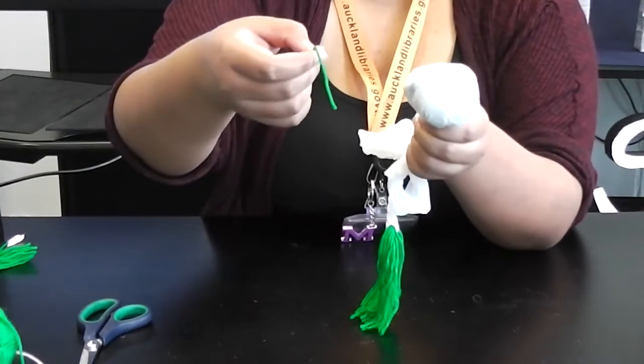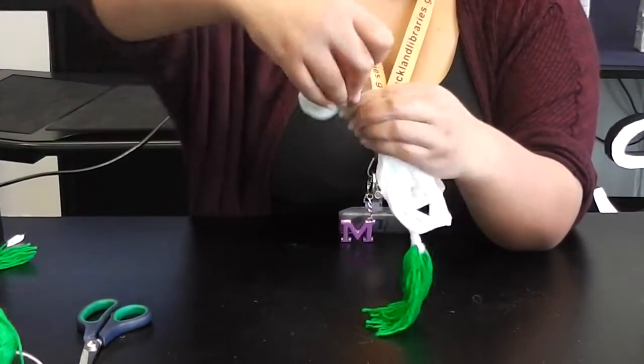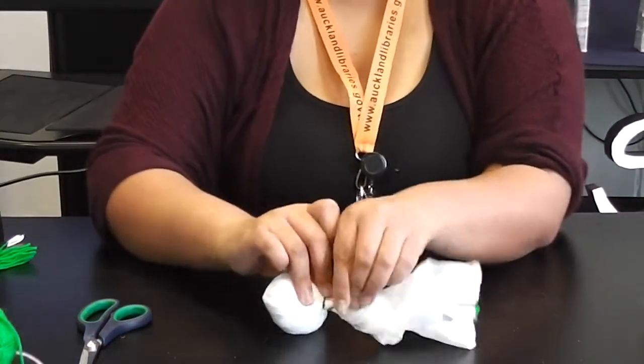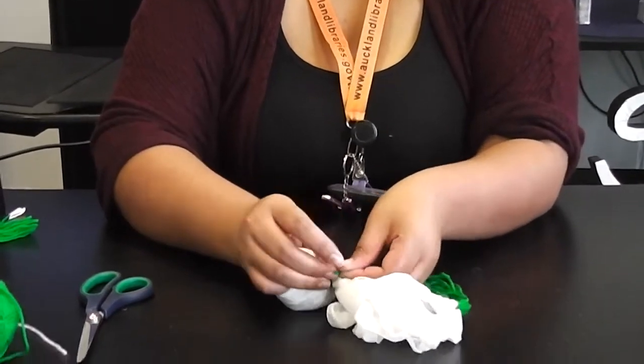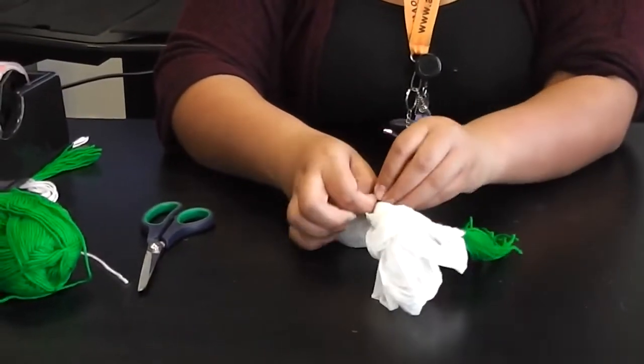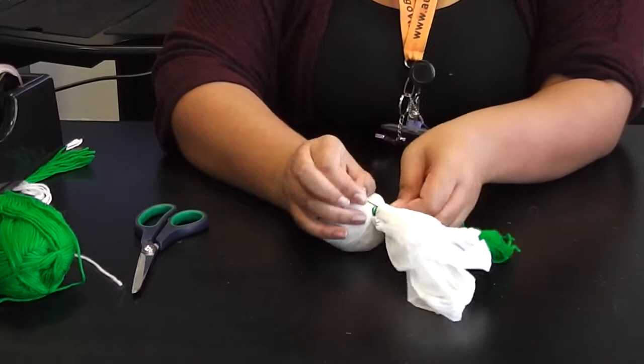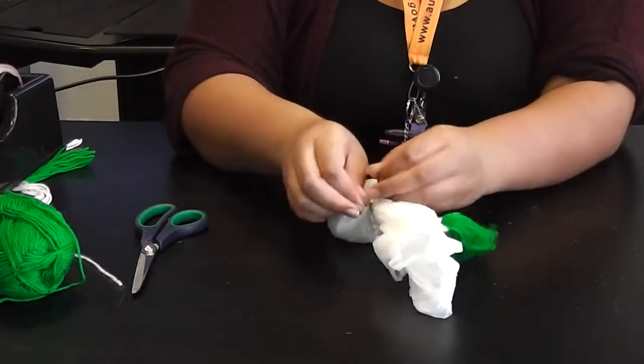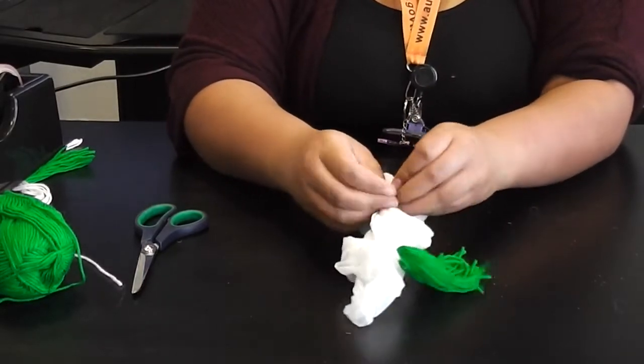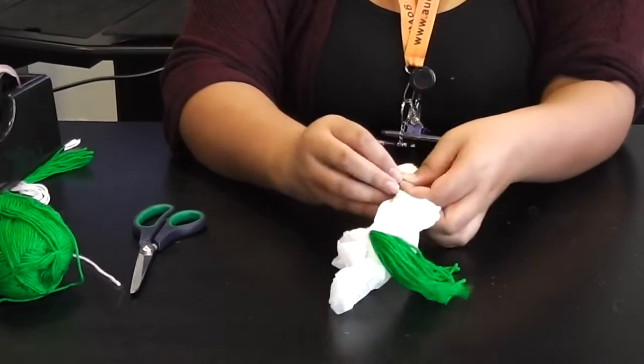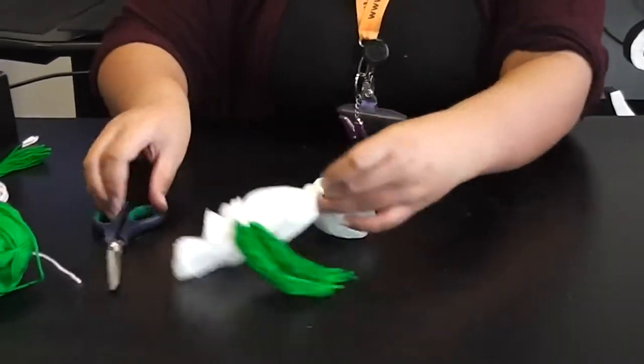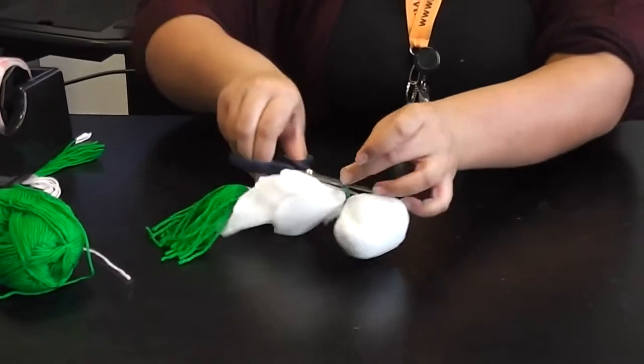So I'm going to grab the other string that I had before. I'm just going to wrap that twice and then I'm going to tie it like a shoelace like I did the other times. One and two. Cool. And then if there's any extra string like this you can just snip those off.